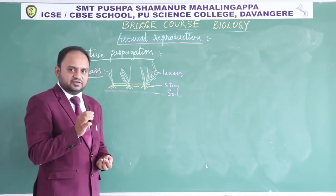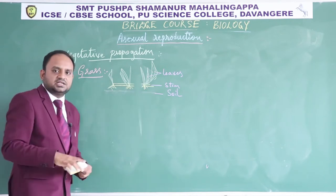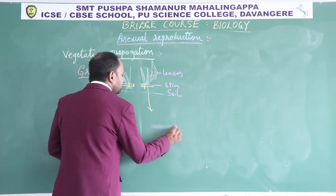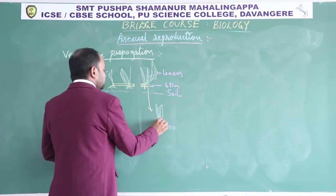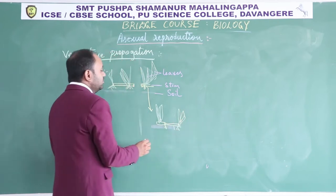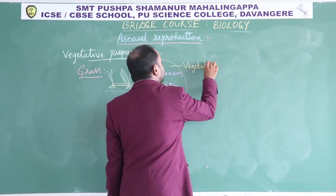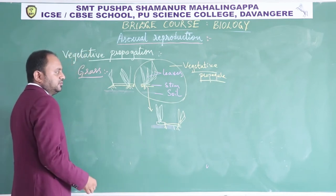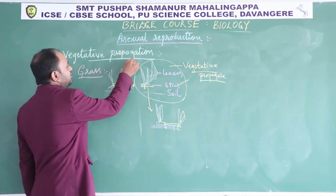Here, if I excise this unit — meaning I make a cut and separate it — and take it to a new place and put it on the soil, that cut piece taken from the mother plant develops into a new grass plant. This detached part is called the vegetative propagule. What is actually involved in developing into the new plant is the stem, so here the stem is modified into the vegetative propagule serving for vegetative propagation.